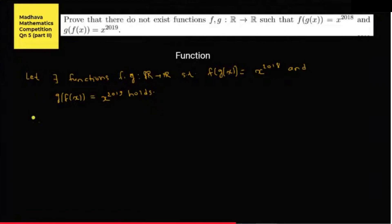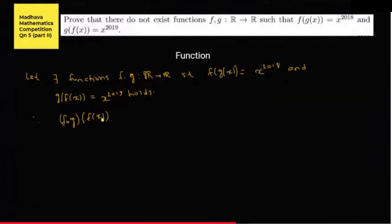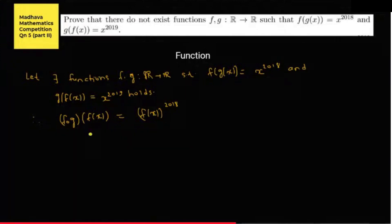Since f(g(x)) belongs to the real numbers, it can be in the domain of f. So f maps g(f(x)), which equals f(x^2018). Here, instead of x I have substituted f(x), and since the domain of f(x) and x are the same, this is valid. This implies f(g(f(x))) = f(x^2018).